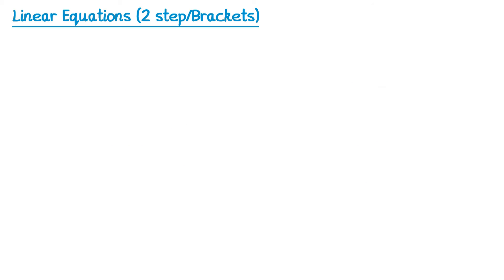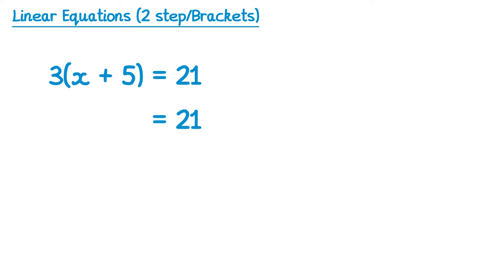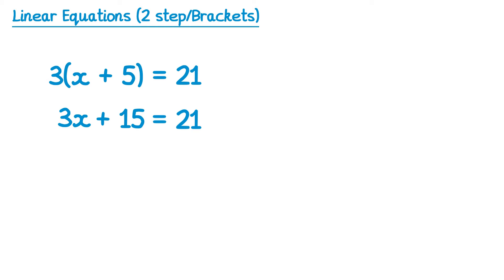Now let's have a look at some examples that involve brackets. There are two different approaches you could use. The first approach is to expand out the bracket. We leave the right hand side alone as equals 21, and on the left hand side we multiply out the bracket: 3 times x is 3x, and 3 times positive 5 is positive 15. We've now expanded the left hand side, the bracket is gone, and we have a two-step equation to solve, just like before.